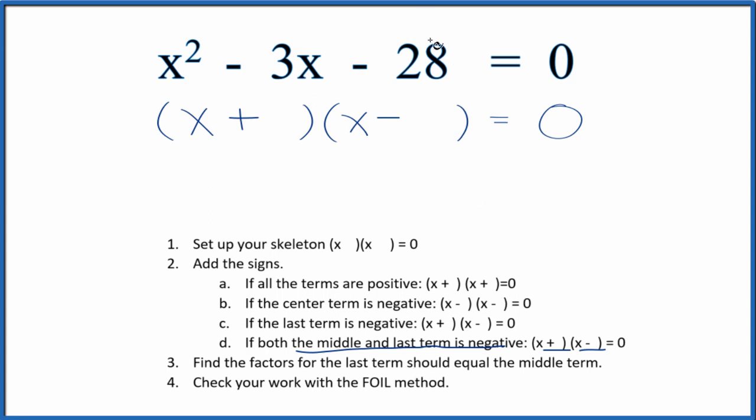Then I'm going to find the factors of this last term, this negative 28, that are going to equal the middle term. So I'm going to write the factors of 28 here.